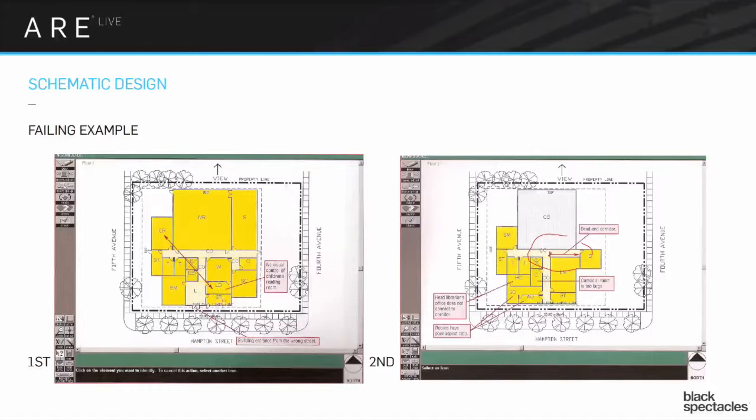And one that's sort of worth pointing out is that this room and this room were supposed to, so that's, that room is supposed to be visually controlled from this room. But obviously you can't see around a corner, right? So that doesn't count as visual control. That room probably should have been right here.